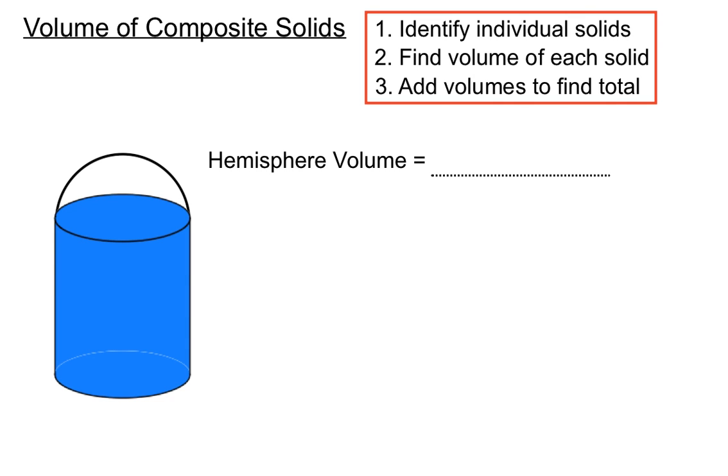So we find the hemisphere volume - there's a video to show you how to do that already listed - and the cylinder volume, and we'll just add those two together. Just break it up and do each bit separately nice and carefully.